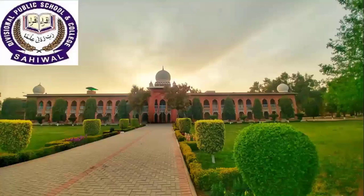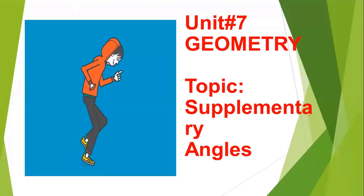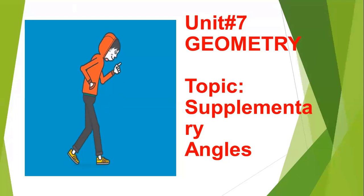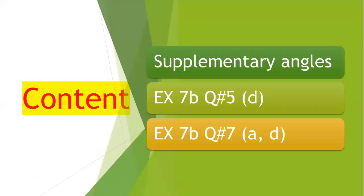We are going to study unit number seven, geometry, and today's topic is supplementary angles. By the end of the lesson, students, you will be able to define supplementary angles and solve how to find them. Today we will cover the definition of supplementary angles, question number five part D from exercise 7B, and question number seven parts A and D from exercise 7B.